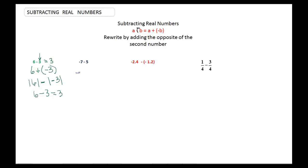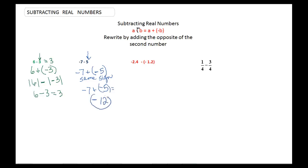Negative 7 plus the opposite of 5, which is negative 5. Now we have the same sign here. So it's really just negative 7 plus negative 5 is equal to negative 12. Same sign — add them, assign the sign. 7 plus 5 is 12, they're both negative, so it's a negative 12.